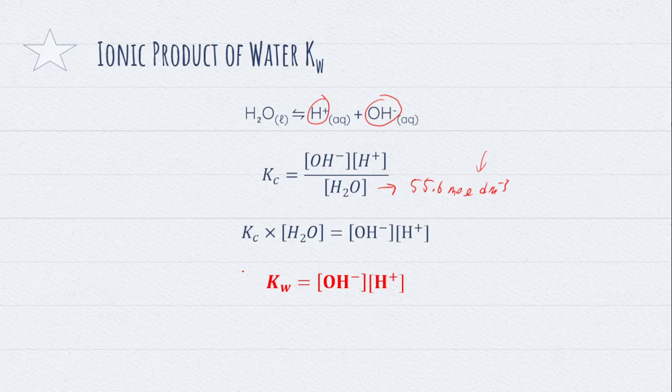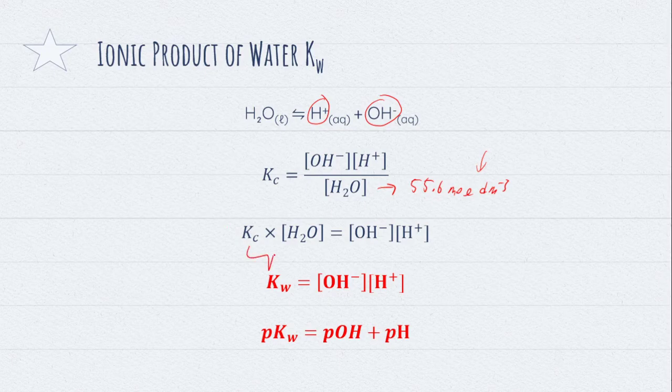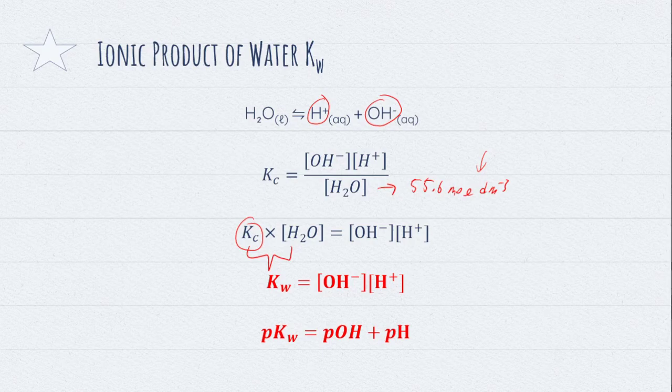Then how do we involve pH and pOH? Well, P is minus log. We just apply minus log on both sides. We get pKw equals pOH plus pH. And you notice that Kw forms from Kc times the concentration of H2O. And the properties of Kc would then be related and also applied to Kw as well.